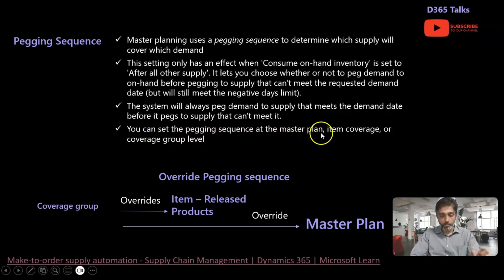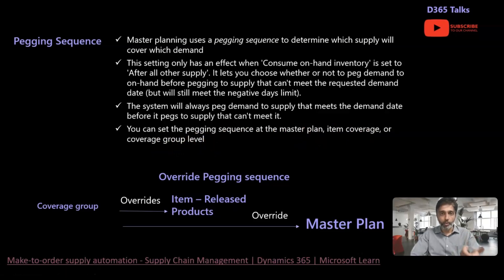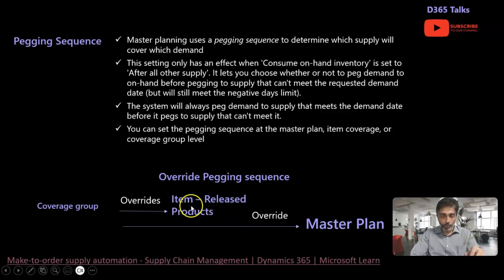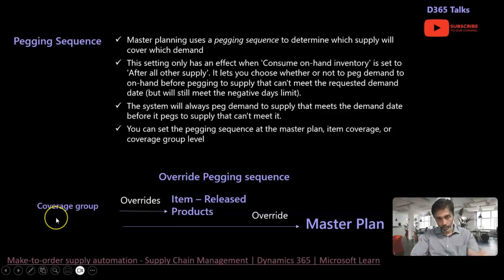You can set the pegging sequence at the master plan, item coverage, and coverage group level. The system checks the pegging sequence first at the master plan level, then at the item level in released products under item coverage, and only last at the coverage group level. If not configured at the master plan or item level, it falls back to the coverage group configuration.